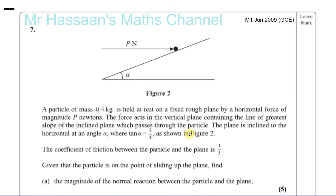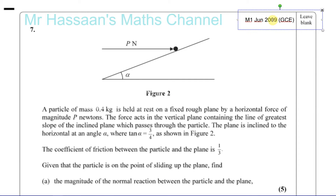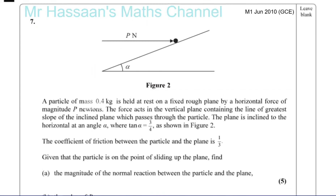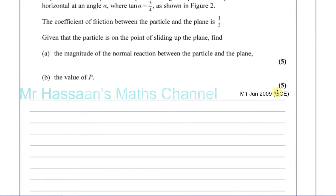Question number seven, M1 Mechanics 1, June 2010 GCE — a question about a particle on an inclined plane. It's statics; the particle is not moving.